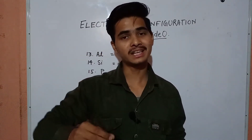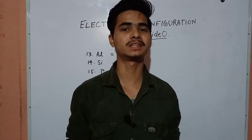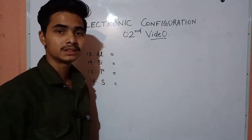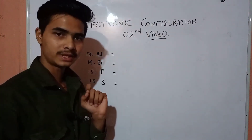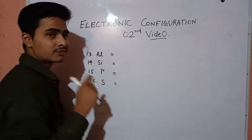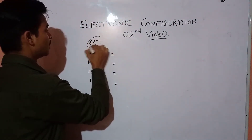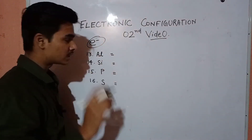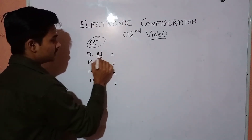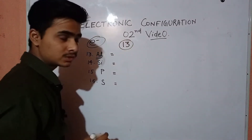Let me start from where I left off in the last video. In the last video, I taught electronic configuration up to atomic number 12. So in this video, I am going to give you the electronic configuration from atomic number 13 to 20. So answer me if you know: what is the electronic configuration of aluminium? How many electrons are there in aluminium? Aluminium has 13 electrons.